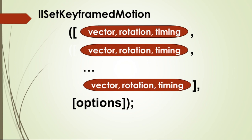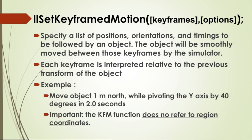Between the parentheses there are two lists: a list of keyframes — which can be very, very long — and a list of options. The way it reads is that if you specify a list of positions, each keyframe is interpreted relative to the previous transform of the object. For example: move the object one meter to the north while rotating the y-axis by 40 degrees and do that in two seconds. Importantly, the keyfm function never refers to region coordinates.